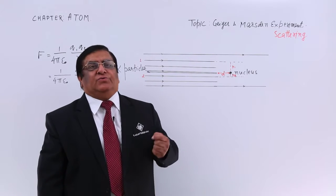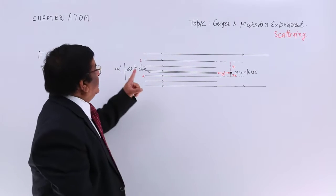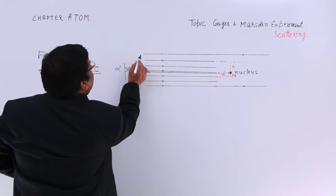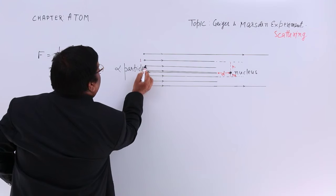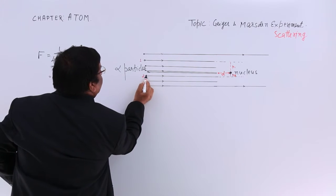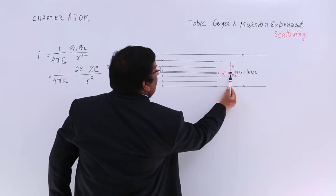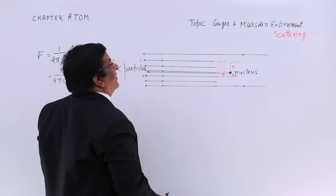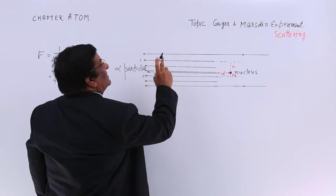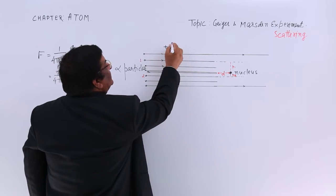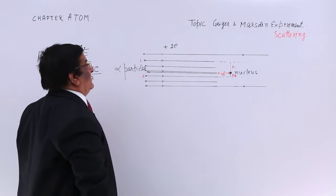Number one, how scattering happens? These are the alpha particles. Let us assume magnified and so many alpha particles are moving towards the nucleus. Here is the small nucleus. Now, alpha particles having certain electric charge and that electric charge is positive in nature and it is equal to +2e.